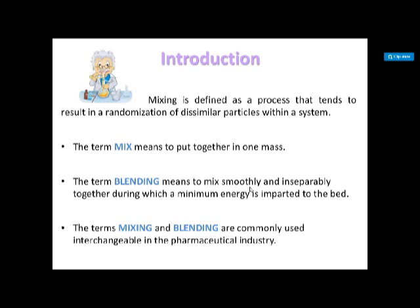The objectives of mixing are: to obtain a uniform mixture, to cause mass transfer to occur, to effect chemical reactions, and to obtain emulsions and suspensions. So the key objectives are obtaining uniform mixtures, enabling mass transfer, facilitating chemical reactions, and producing emulsions and suspensions.